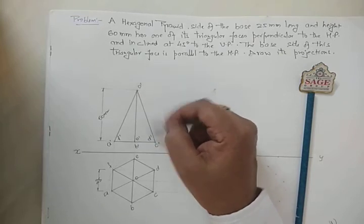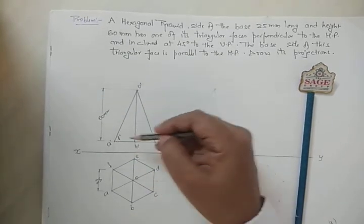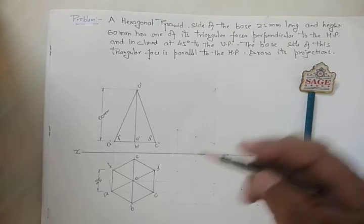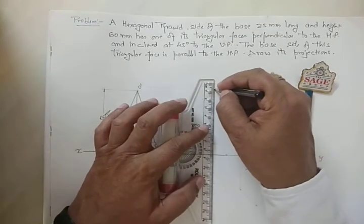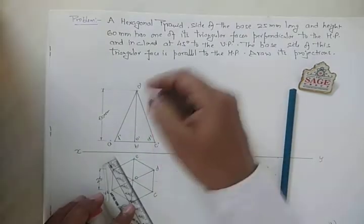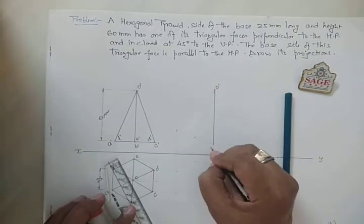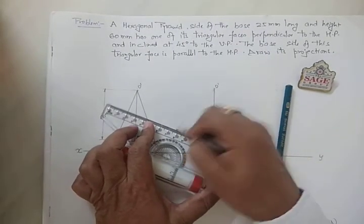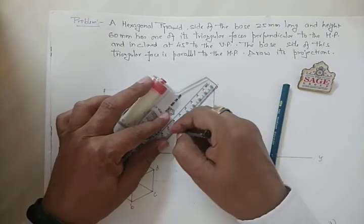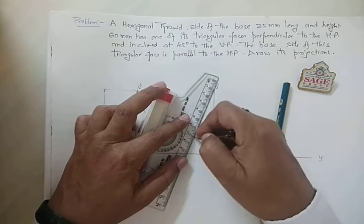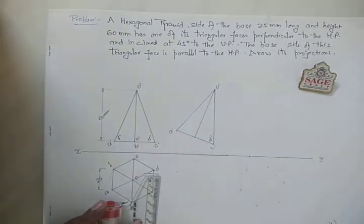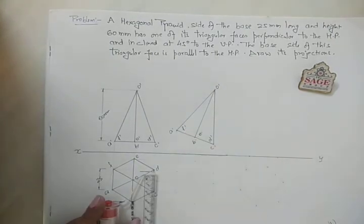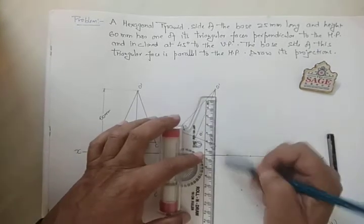Now look at these two faces: one will be O', C', D' and another face will be O', A', F'. Either of them you can make perpendicular to the HP. Perpendicular to HP means just make it perpendicular. So in the second stage, I am going to make O', C', D' perpendicular to the XY line. With reference to this line, copy the complete figure — dimensions will be the same — and you will get the triangle with points A', B', C', D', E', and F'.